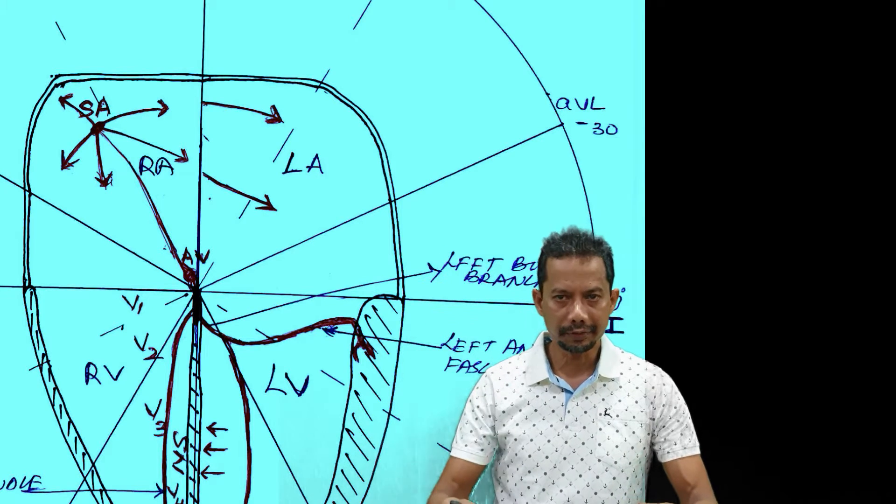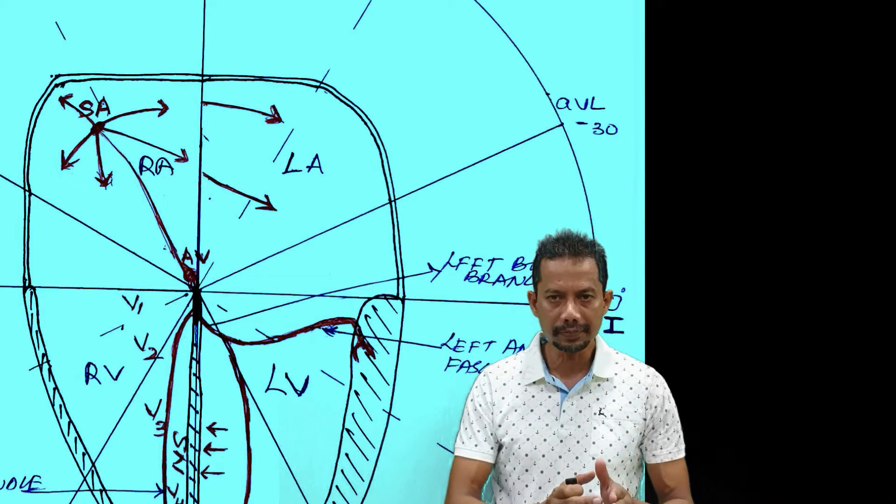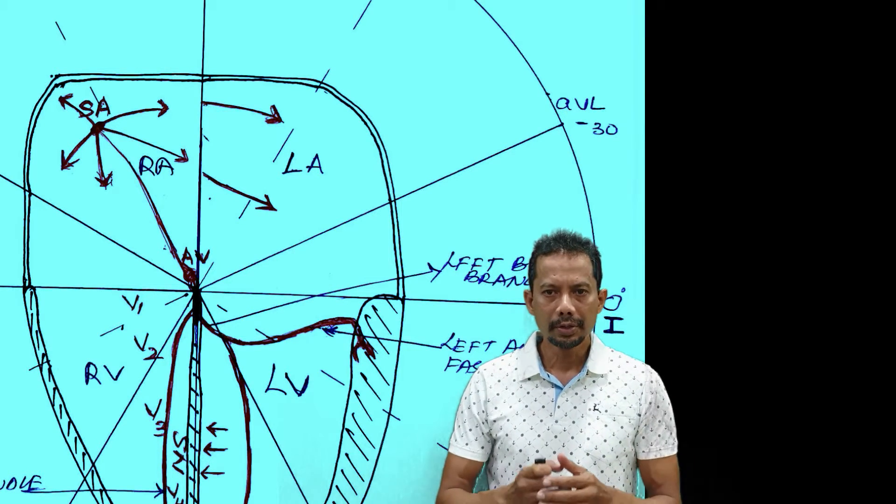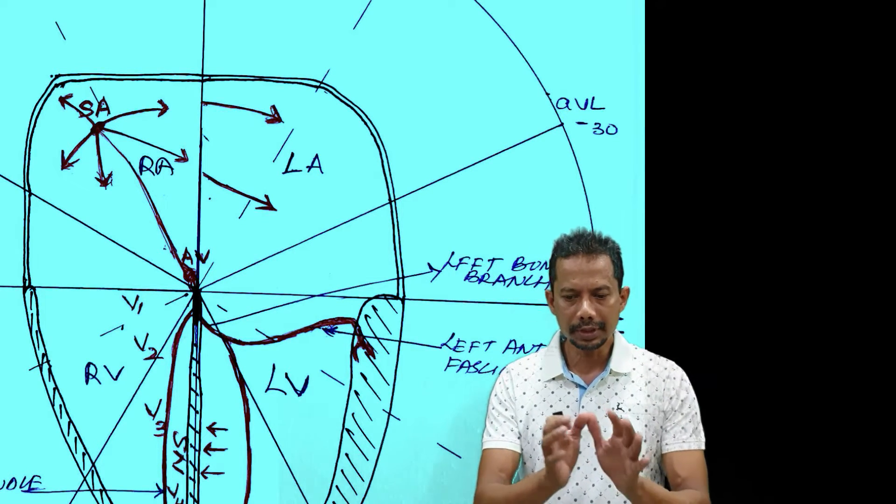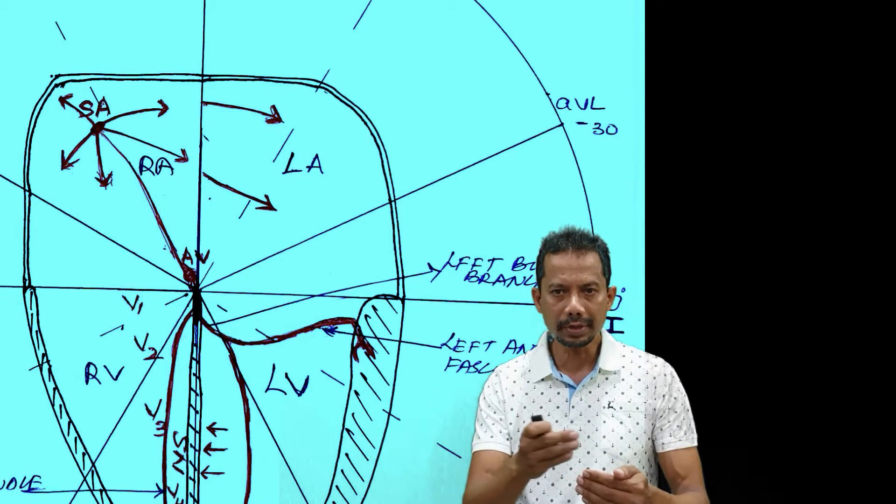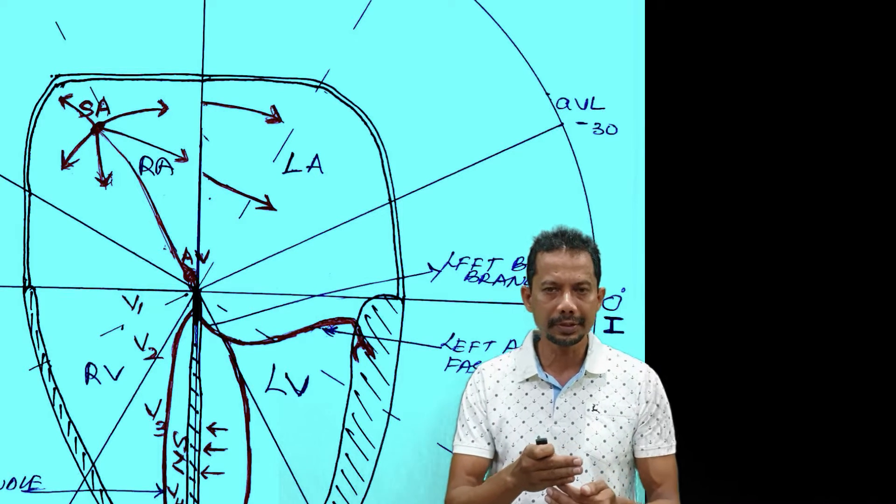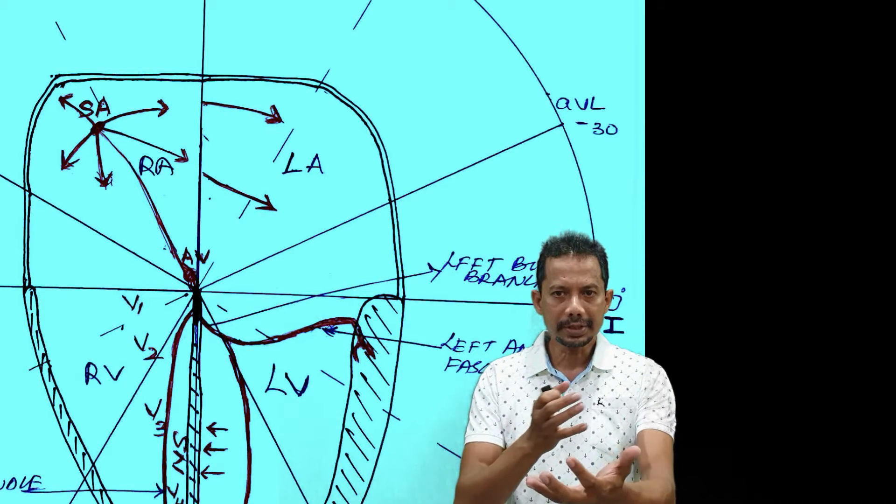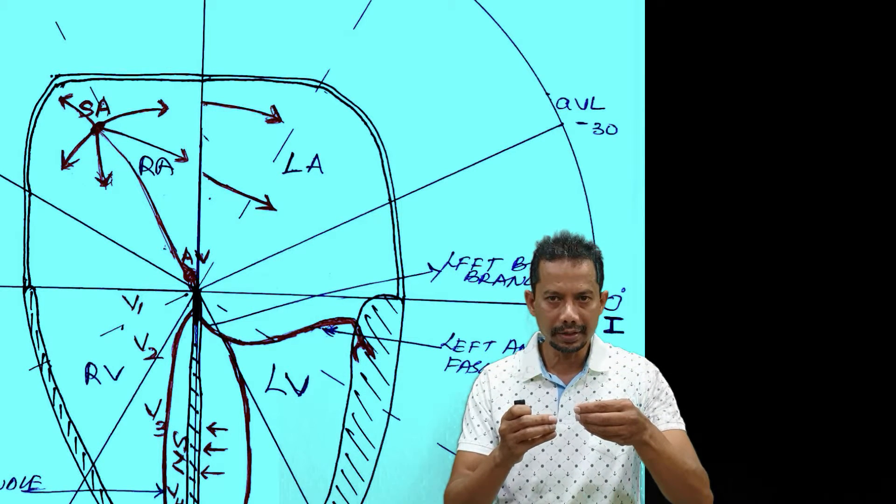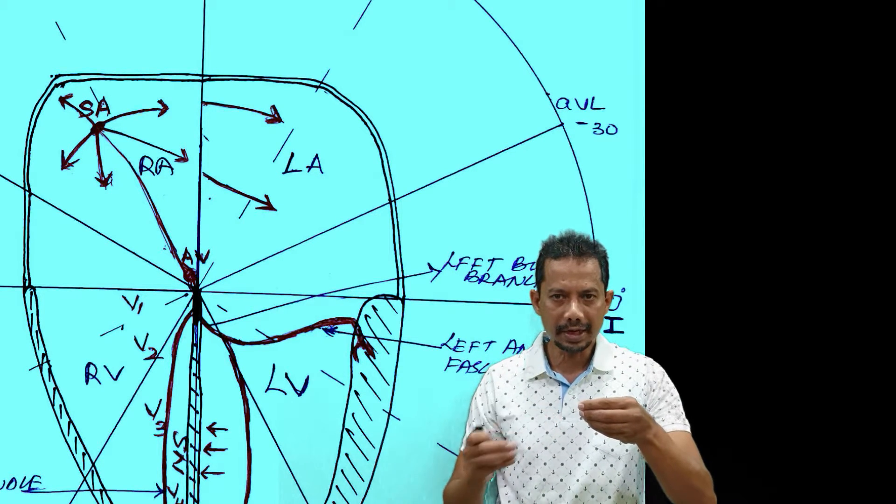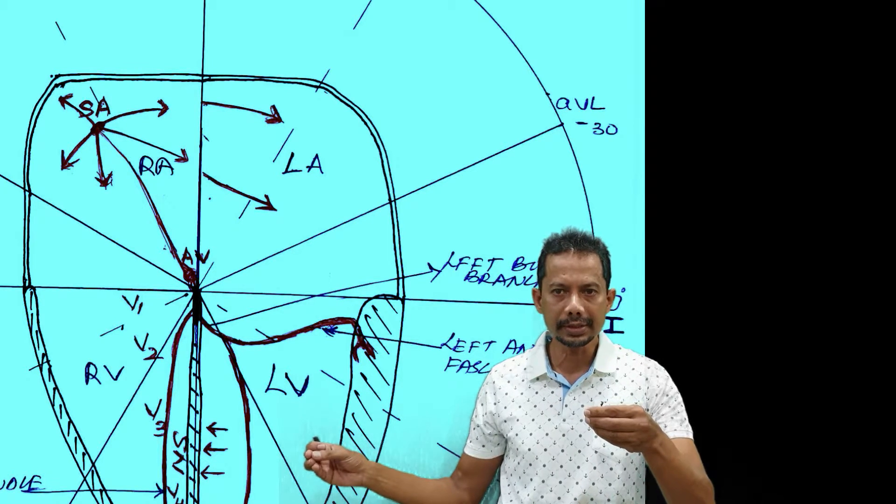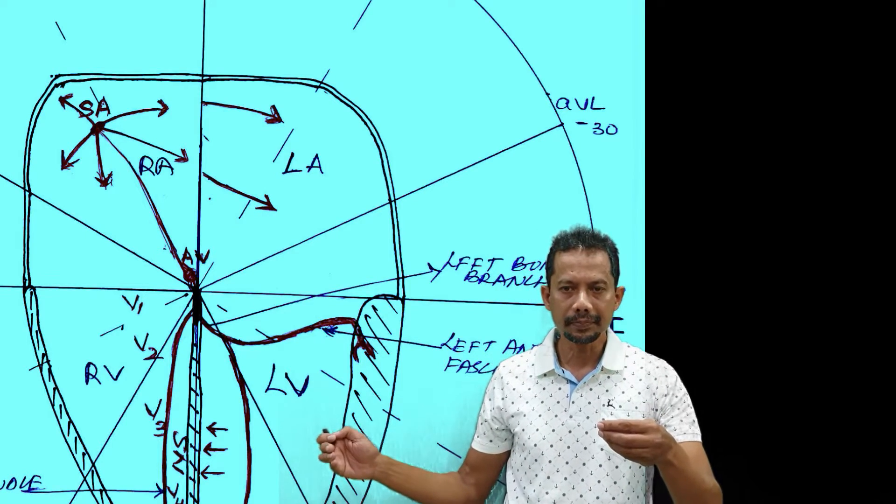More tall R waves from bulky structure, less tall R waves from less bulky structure. V1 and V2 are looking at the interventricular septum. When the impulse travels from left to right to depolarize the interventricular septum, the impulse is perceived by V1 and V2 as if it is coming towards them, so there is a small r in V1. At the same time there is a small q forming in V5, V6.